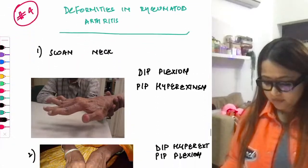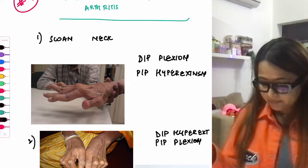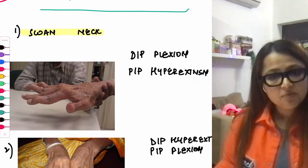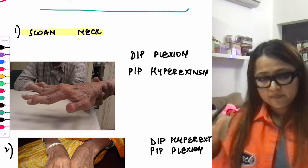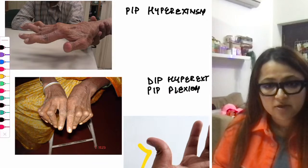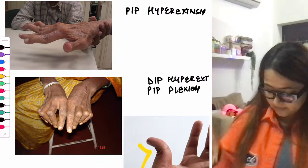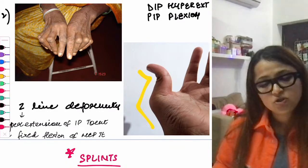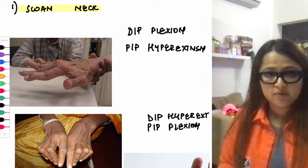Now the deformities seen in rheumatoid arthritis. Number one is ulnar deviation of the fingers — the fingers deviate toward the ulnar side. Number two is swan neck deformity — DIPs are in flexion and PIPs are in hyperextension. Number three is boutonniere deformity — the opposite of swan neck, with DIP in hyperextension and PIP in flexion. Number four is Z-line deformity — hyperextension of the interphalangeal joint with fixed flexion of the metacarpophalangeal joint.